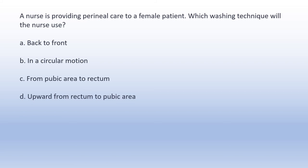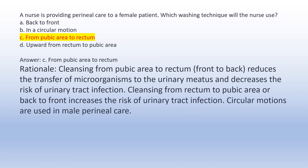A nurse is providing perineal care to a female patient. Which washing technique will the nurse use? A. Back to front. B. In a circular motion. C. From pubic area to rectum. D. Upward from rectum to pubic area. Answer C: From pubic area to rectum. Rationale: Cleansing front to back reduces the transfer of microorganisms to the urinary meatus and decreases the risk of urinary tract infection. Cleansing from rectum to pubic area increases the risk of UTI. Circular motions are used in male perineal care.